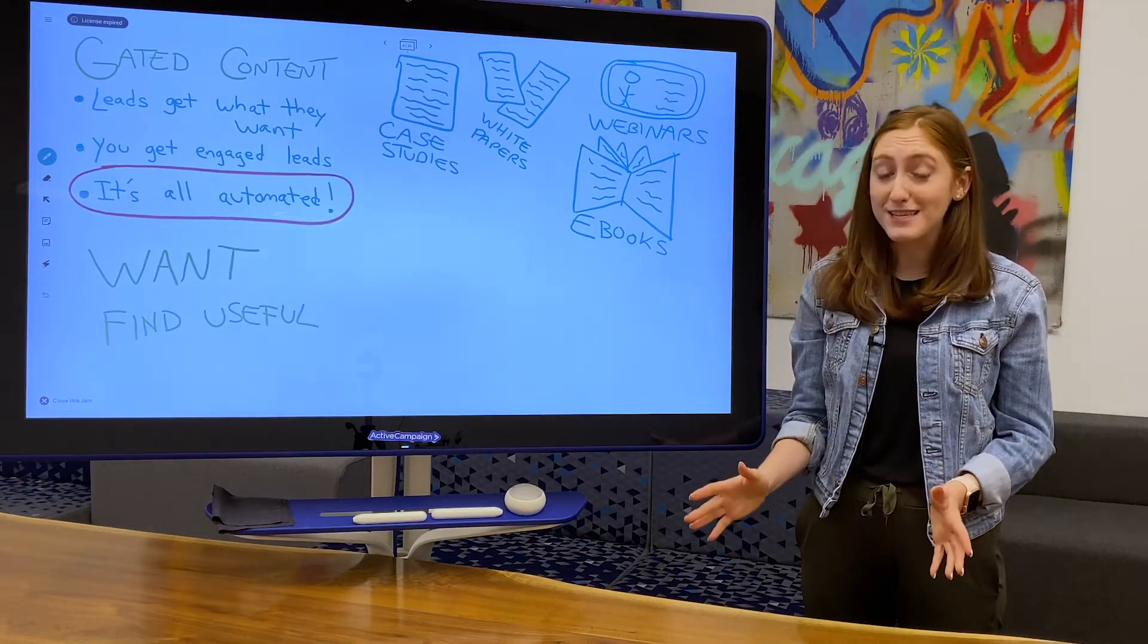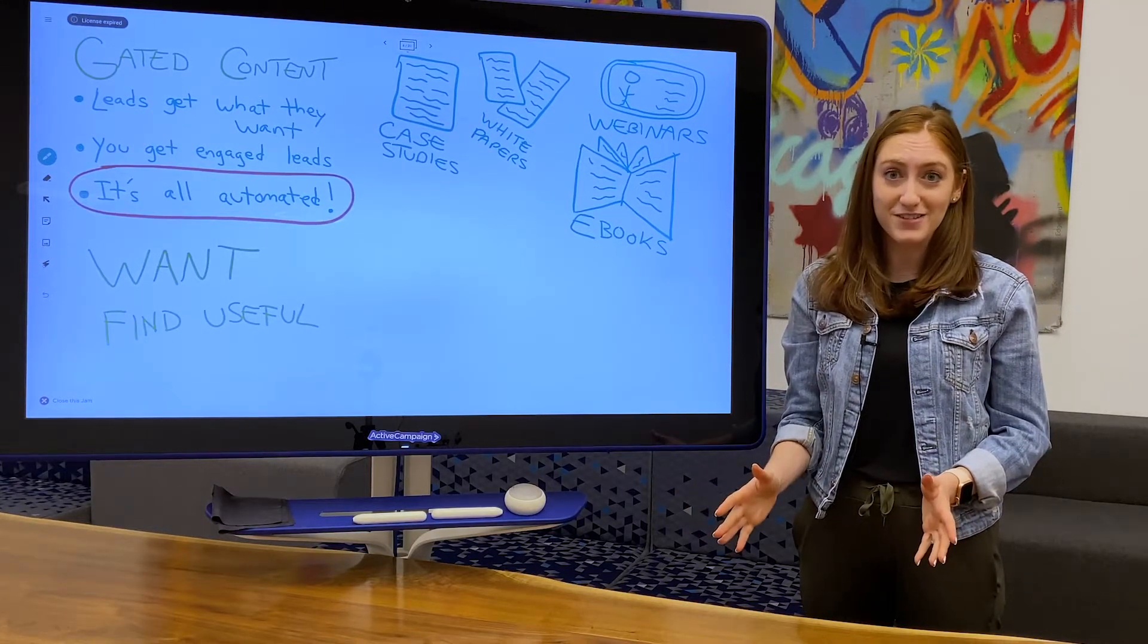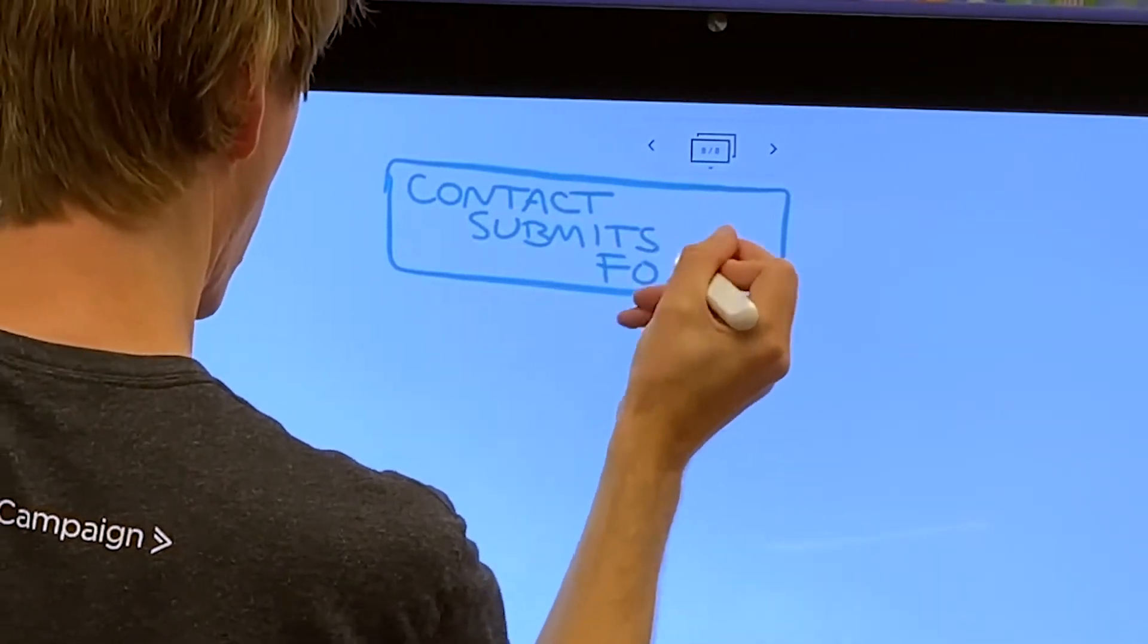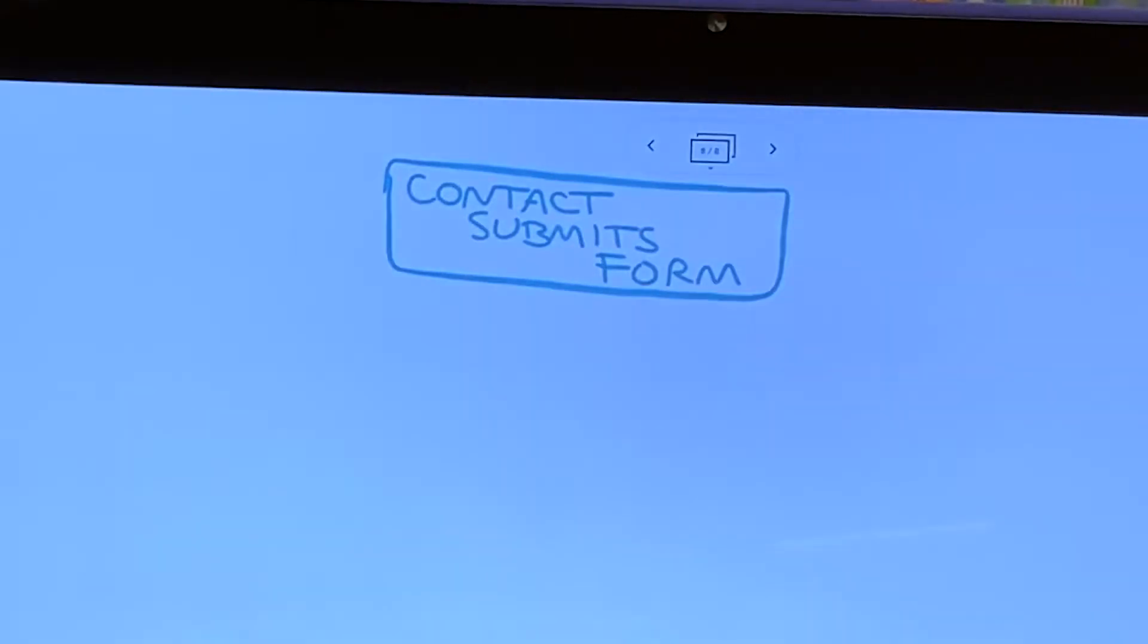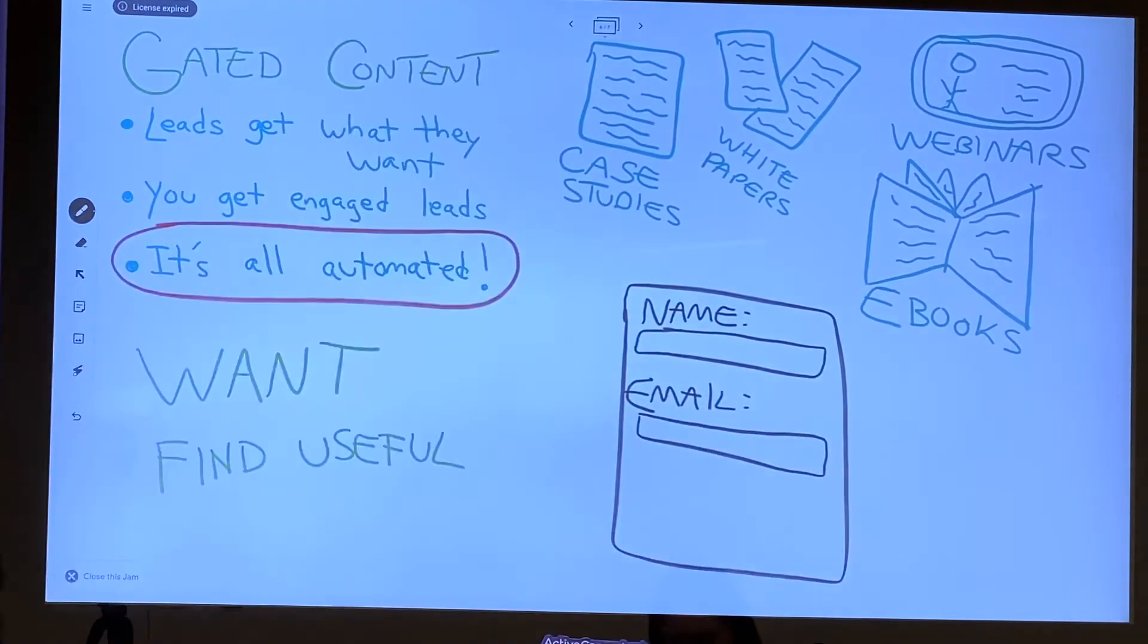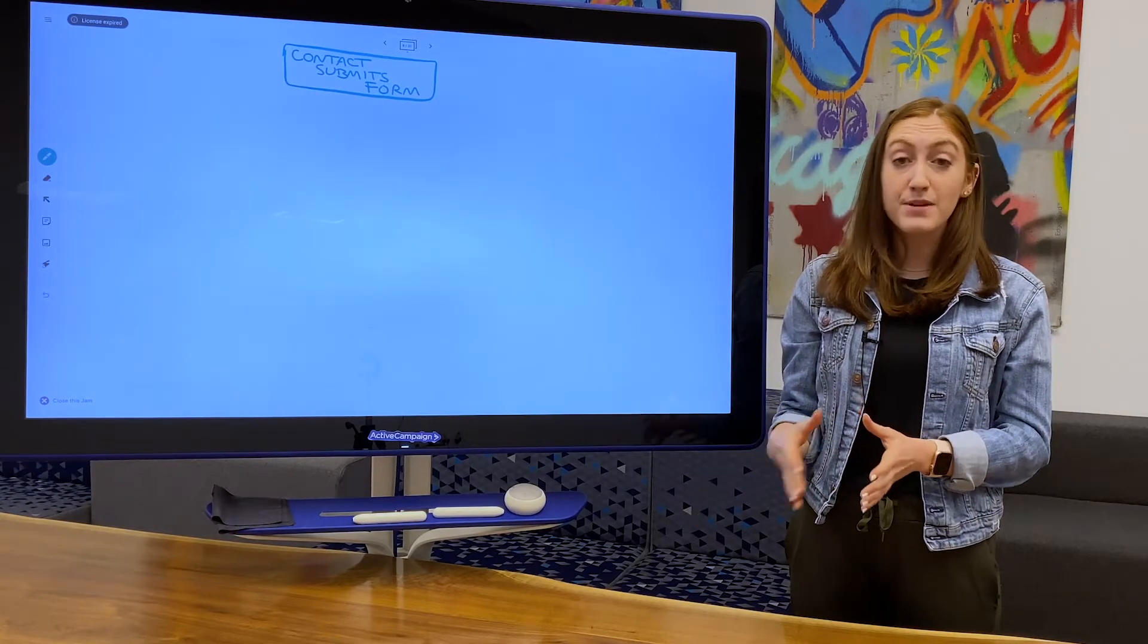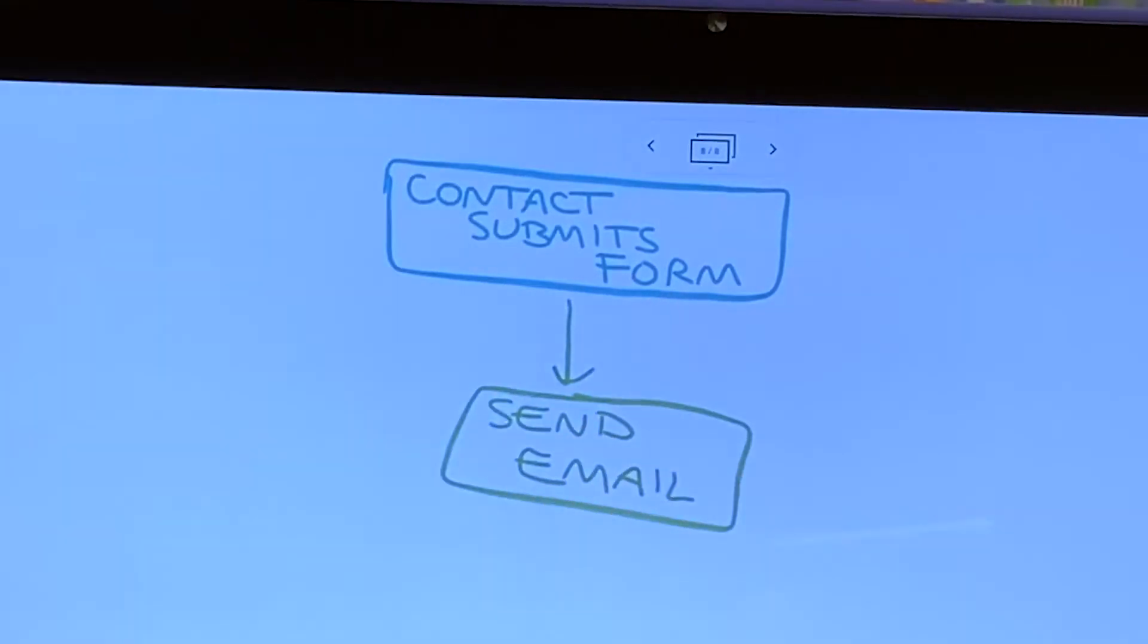Landing pages are a great place to deliver gated content to your visitors. It all starts when a visitor fills out a form on your landing page. The most basic information to capture here is your visitor's name and email address. That way you know who they are and how to contact them. After they fill out your form, send them an email with a link to the content that you've promised them.